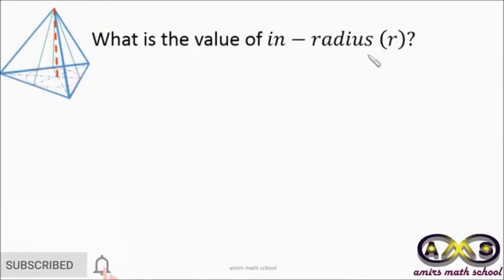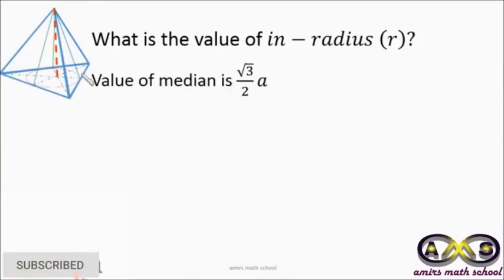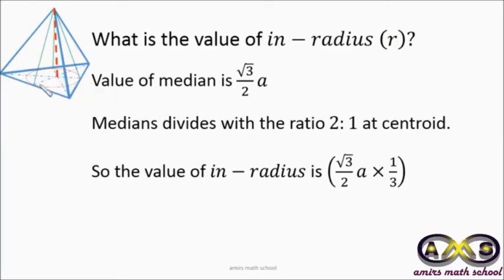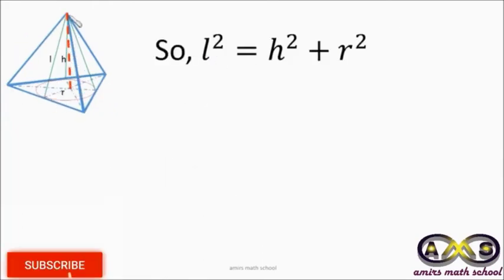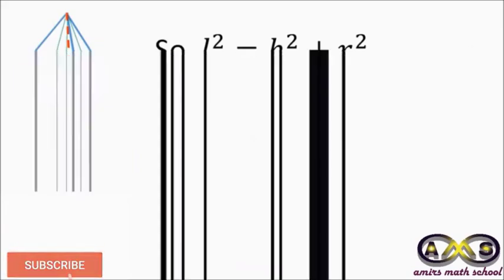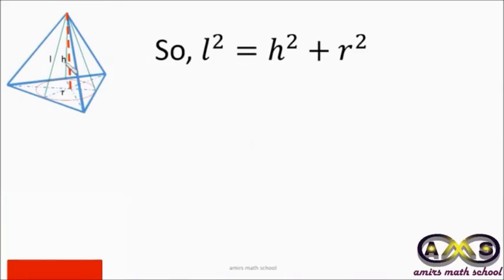We first find the inradius. The full median length is (√3/2) · a, and the centroid divides the median in a 2:1 ratio. So the inradius — the shorter part — is one-third of the median: (√3/2) · a × (1/3) = a/(2√3). Now applying the Pythagorean theorem: l² = h² + r², so h² = l² − r².